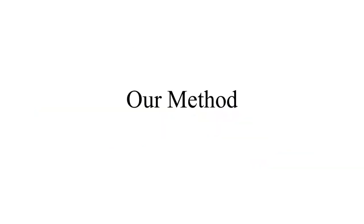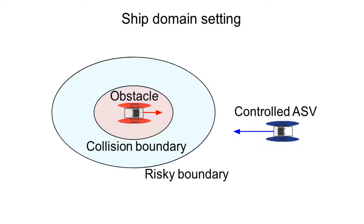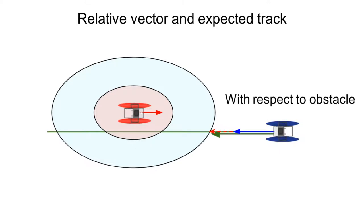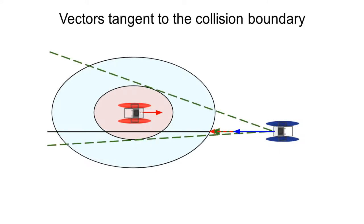Our method adapts to the specific obstacle motion model. When the obstacle is within range, the method determines a shift domain called collision and risk boundary. Based on the relative motion ASV to obstacle, the method predicts when the ASV will intersect with the collision boundary.